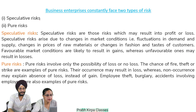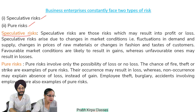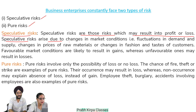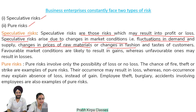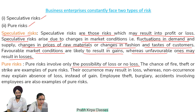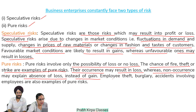Business enterprises constantly face two types of risk. 1. Speculative risk: speculative risks are those which may result in profit or loss. They arise due to changes in market conditions — fluctuations in demand and supply, changes in prices of raw materials, or changes in fashion and taste of customers. Favorable market conditions are likely to result in gains, whereas unfavorable ones may result in losses. 2. Pure risk: pure risk involves only the possibility of loss or no loss. The chance of fire, theft, or strike are examples of pure risk. Employee theft, burglary, and accidents involving employees are also examples of pure risks.